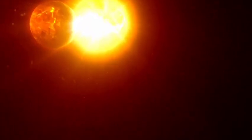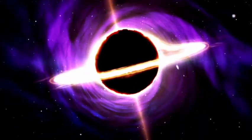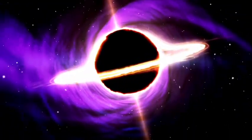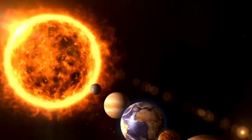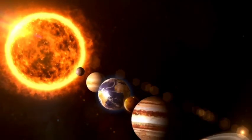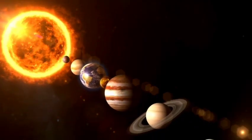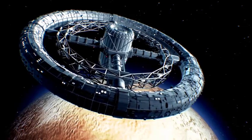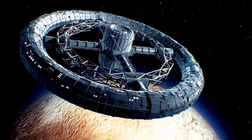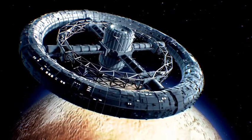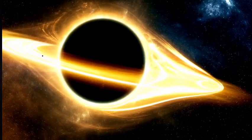Formation of a neutron star or black hole: Depending on the mass of the remaining core, Betelgeuse will either become a neutron star, a highly dense compact object, or collapse into a black hole. If it forms a neutron star, it could emit strong pulses of radiation, becoming a pulsar. If it forms a black hole, it will distort spacetime around it, influencing nearby celestial objects.